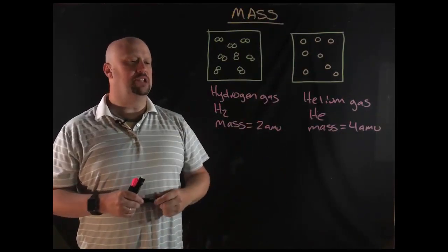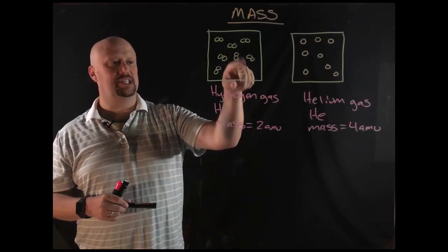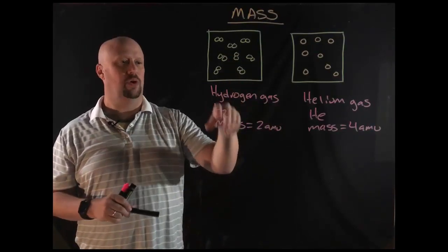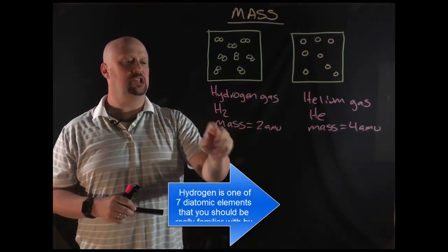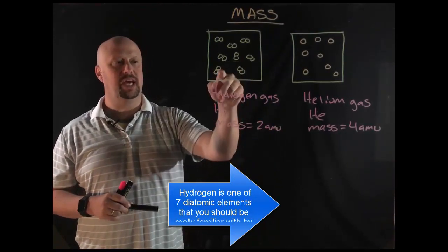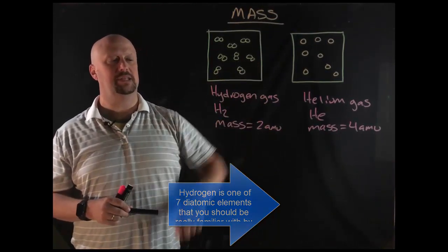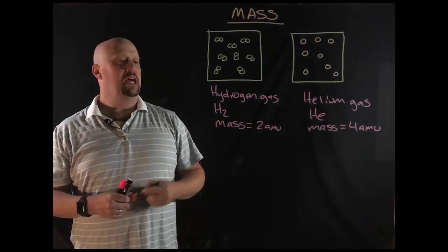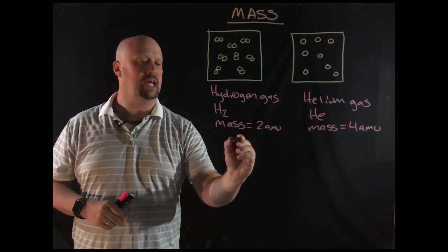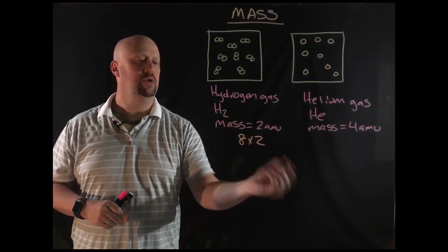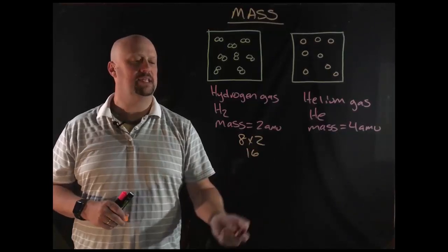Okay, so for hydrogen, hydrogen always exists as a diatomic when it's in gas form. Typically. Okay, so that's H2. Those two atoms together, each one of these things has a mass of two. And since I have eight of them, my mass actually is eight times two. And so that means my total mass is 16.